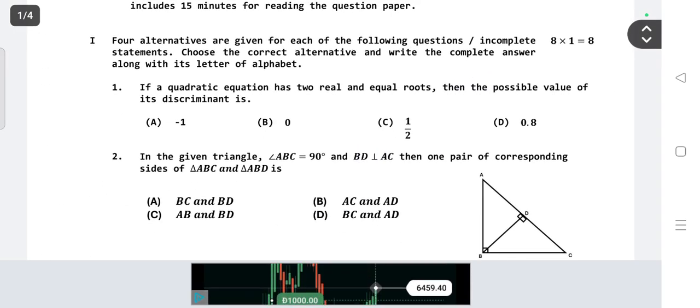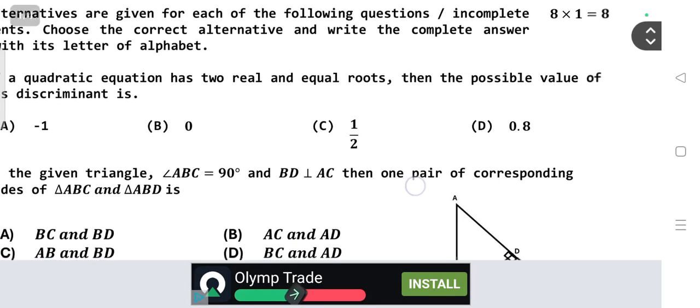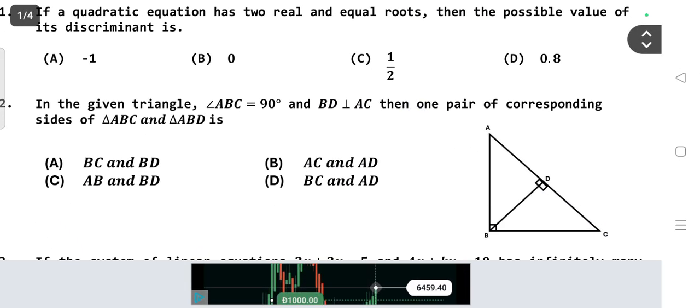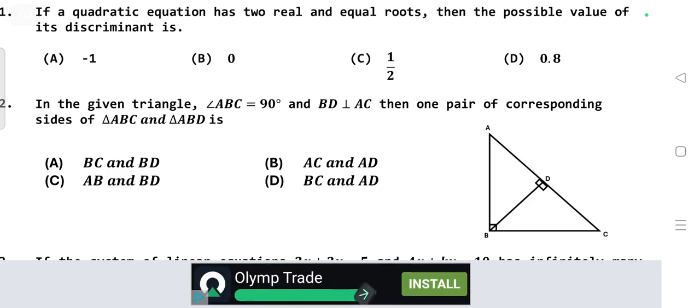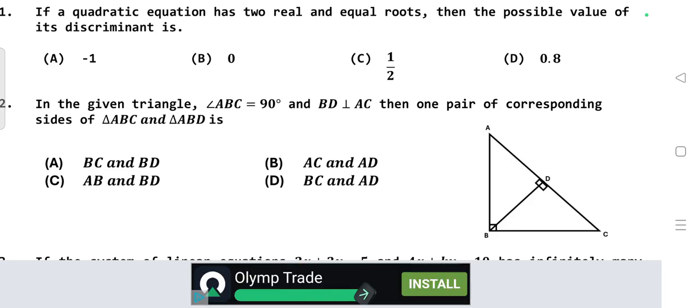First question: If a quadratic equation has two real and equal roots, then the possible value of its discriminant is? Second question: In the given triangle ABC, angle ABC is equal to 90 degrees and BD perpendicular to AC, then one pair of corresponding sides of triangle ABC and ABD is?